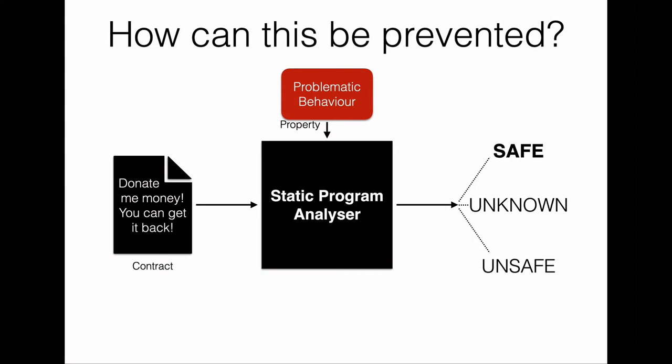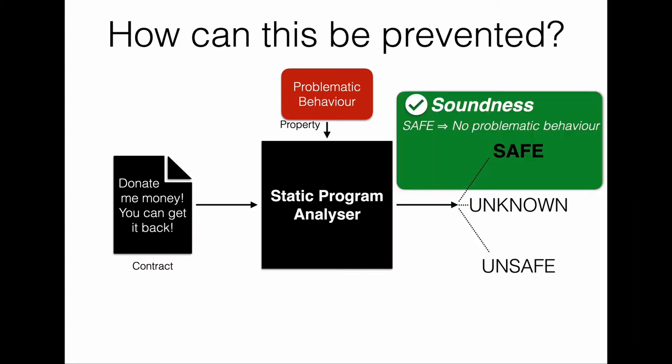A promising way to prevent such attacks is the use of static program analyzers. The idea is that a program, before running it or publishing it on a blockchain, is checked for whether it satisfies a certain security property or shows problematic behavior. Analyzers can give three possible outcomes: they can label a contract as safe, as unsafe, or give no decision due to timeout. We are particularly interested in analyzers that give safety guarantees — if the analyzer indicates safety, a contract should never violate a security property. We say that such analyzers are sound.